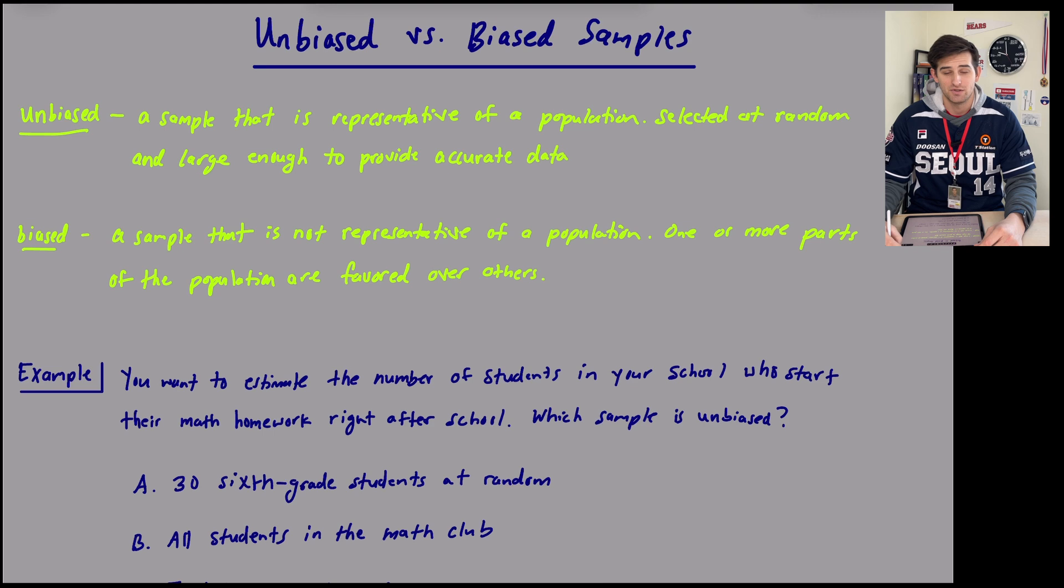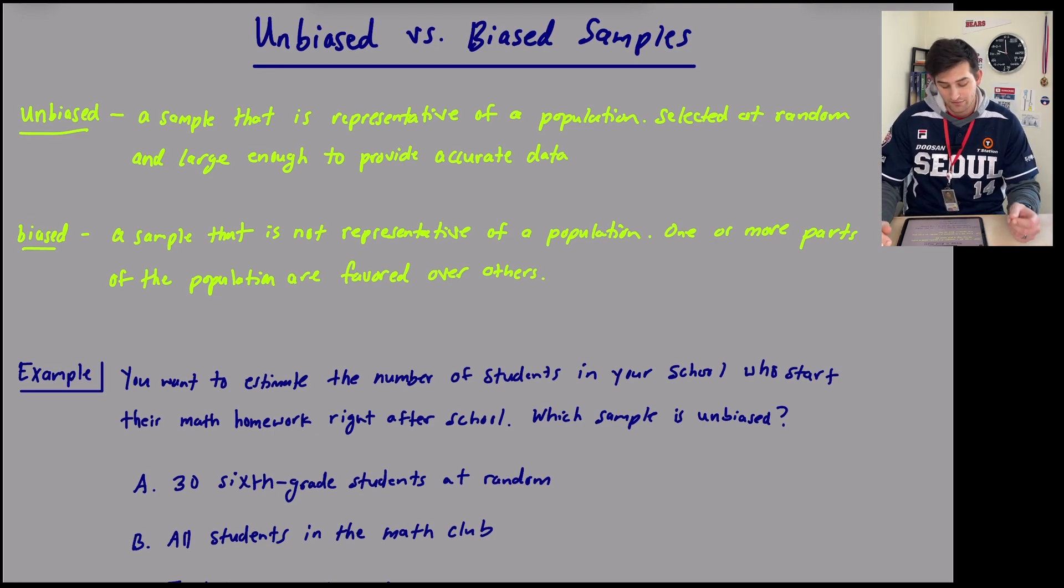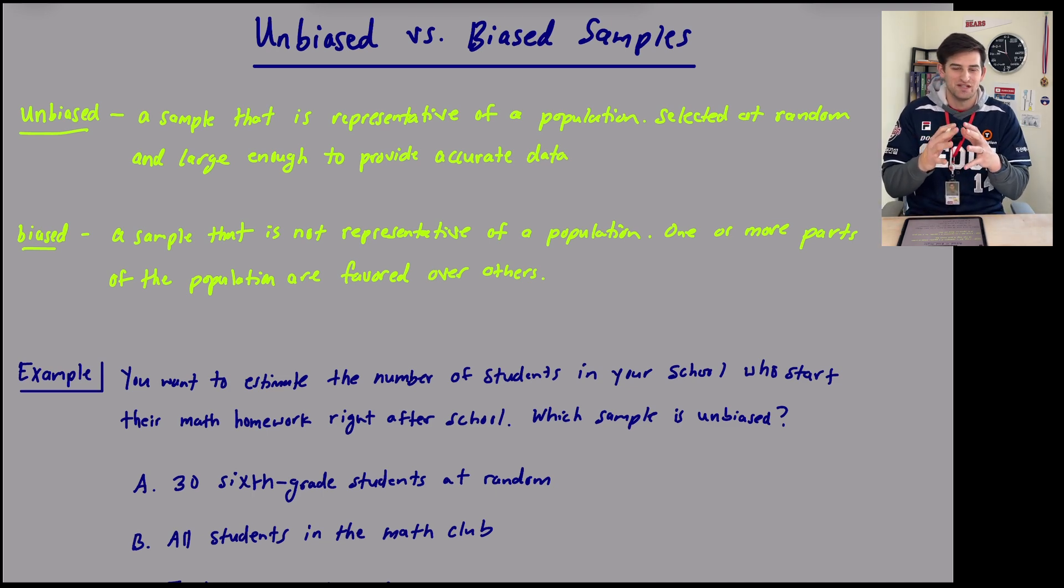Selected at random, so depending on what you're trying to decide or figure out, you don't want to just select people who have a vested interest in that idea. You want these people to be random. And lastly, large enough to provide accurate data. So we want to make sure that we're asking enough people so that it's not just limited to five or six individuals.